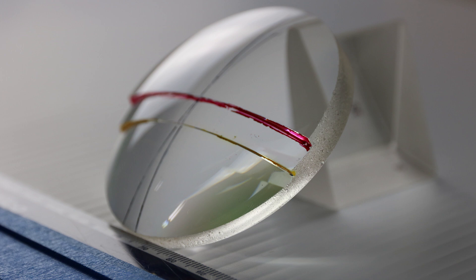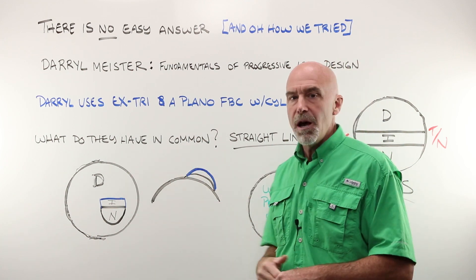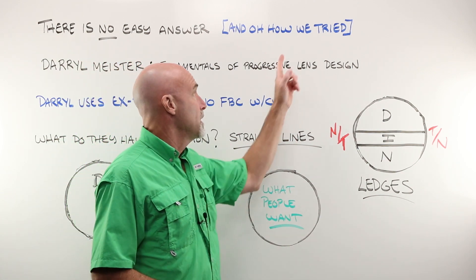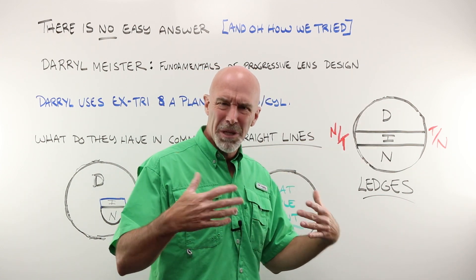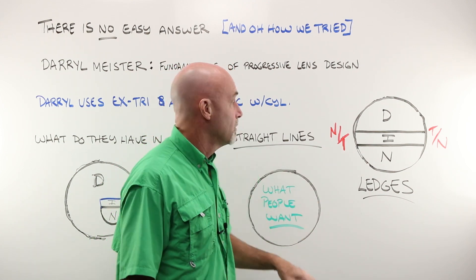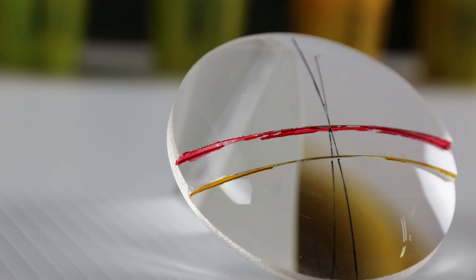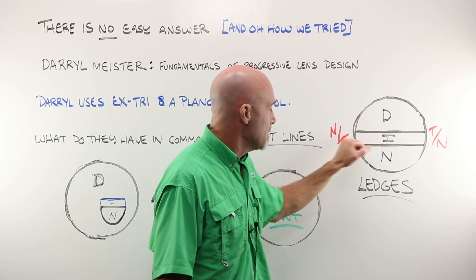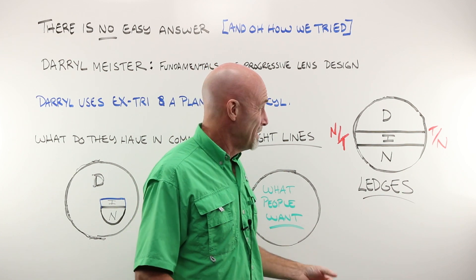What does an executive trifocal and a plano front base curve have in common? They have a straight line or straight lines. If you want to put two different optical mediums together, the best way to do that is a straight line. If you wanted perfect, clean, crisp vision from nose to temple for distance, intermediate, and near, the executive trifocal would be as close as you can get. It's hideous and optically not very good — it doesn't hold AR, looks terrible, and is heavy — but it gives you full-width, wall-to-wall clear distance, intermediate, and near.